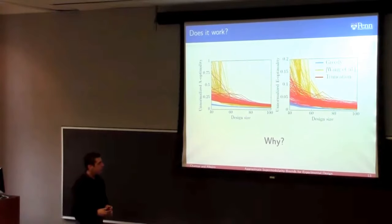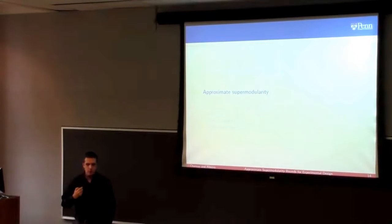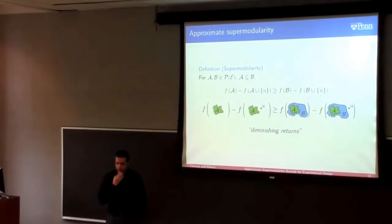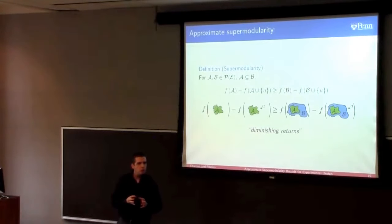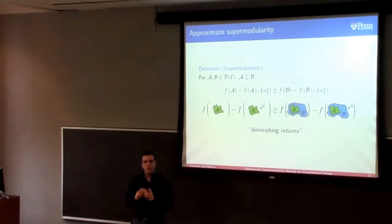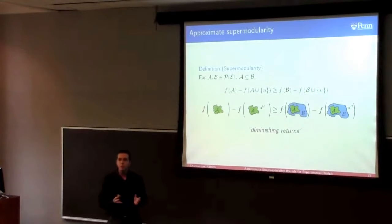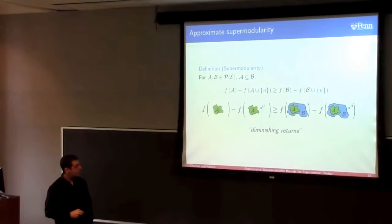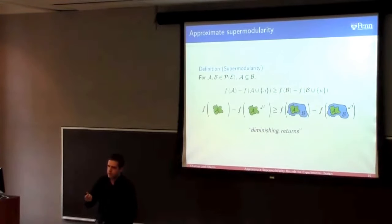To answer why, we look at approximate supermodularity — the tool that explains why greedy works so well. Supermodularity is related to a diminishing returns property of functions: if you have a small design and add an experiment, you stand to gain much more than if you added that experiment to a larger design. If a function is supermodular, this diminishing return property holds. The functions we care about are not supermodular, so they violate this inequality. What we do is allow this inequality to be violated, but in a controlled way.